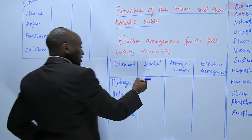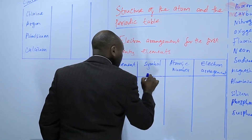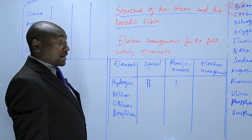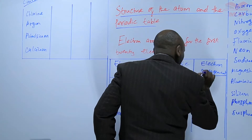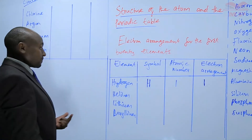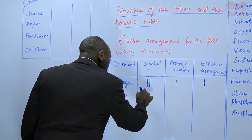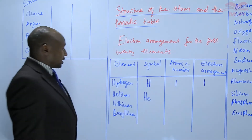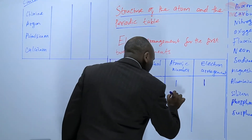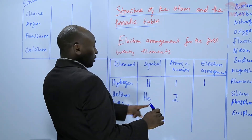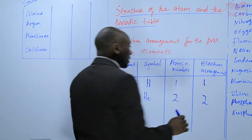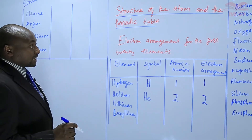In those first 20 elements, hydrogen - the symbol is H, the atomic number is 1, so it has only one electron whose arrangement is just 1. It's only one electron, so that electron is put in the first energy level. Helium - the symbol is He. The first letter of the symbol should be capital all the time. The atomic number is 2, there are two electrons, therefore the arrangement is 2. Those two electrons will fit in the first energy level.